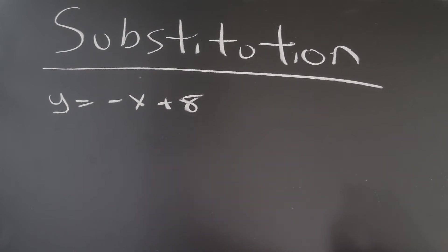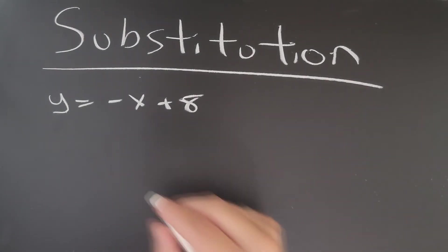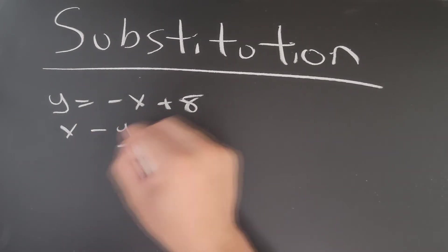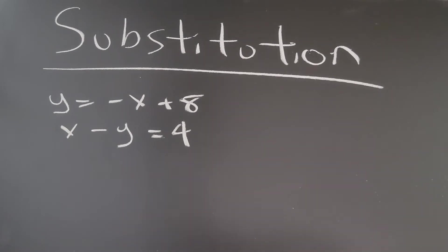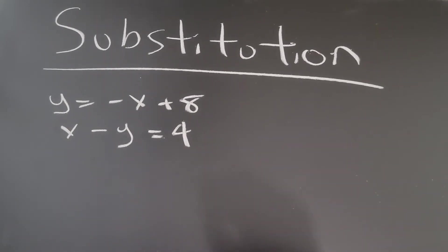y equals negative x plus eight, and we also have x minus y equals four. These are two straight lines and we want to find out where these lines intersect — they're going to intersect at some point on the graph — and we want to find out where they are going to intersect. So we have our two equations.